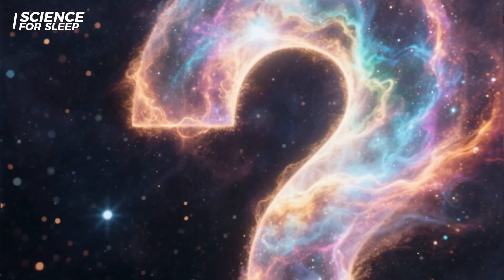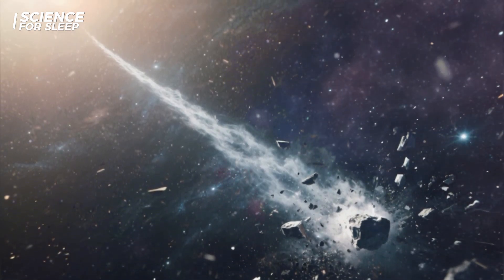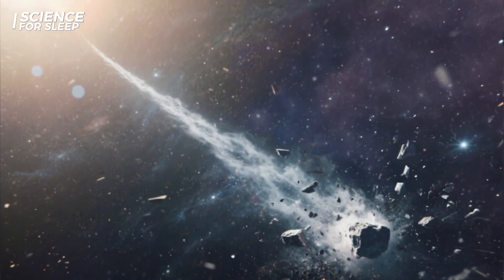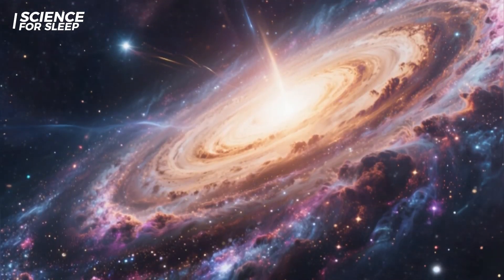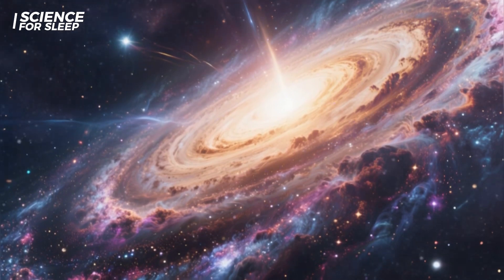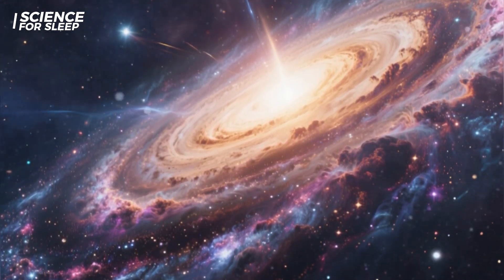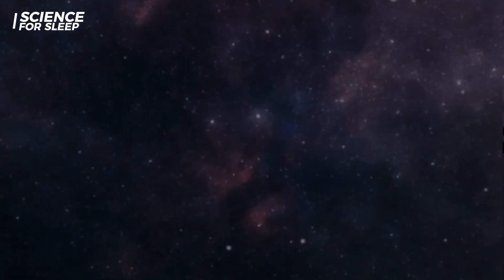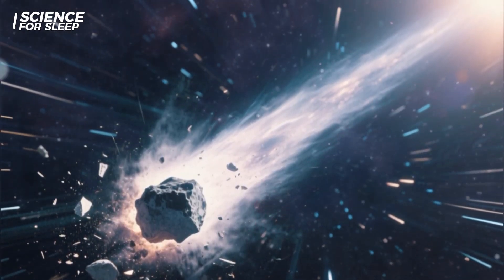So where did it come from? Tracing its path backward through the galaxy is like trying to follow the footsteps of a ghost in a blizzard. The galaxy is a dynamic, swirling place. Stars don't sit still. They orbit the galactic center, weaving in and out of the spiral arms. Over millions of years, the exact origin point becomes hopelessly blurred.